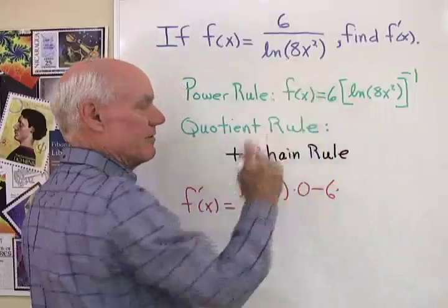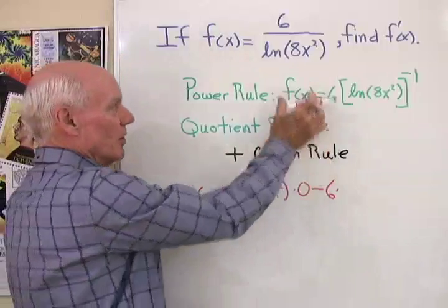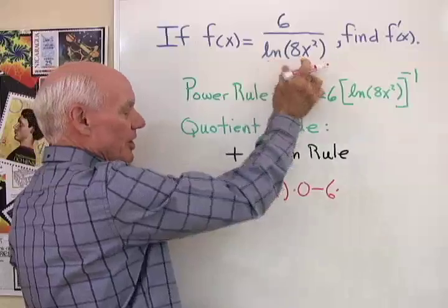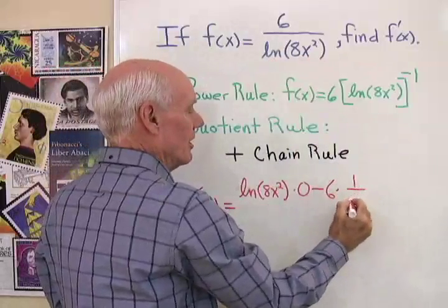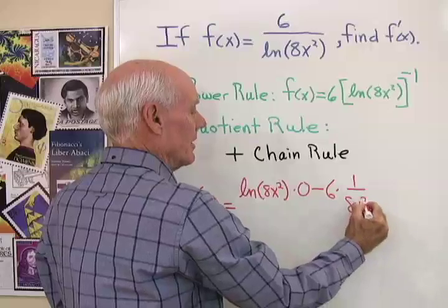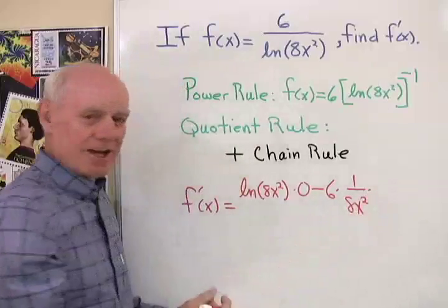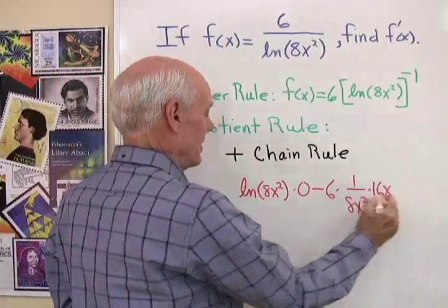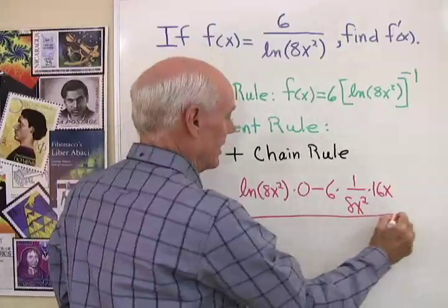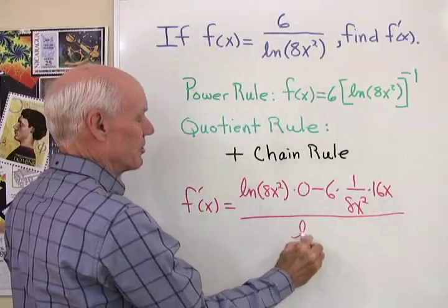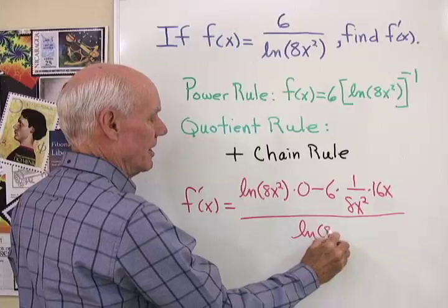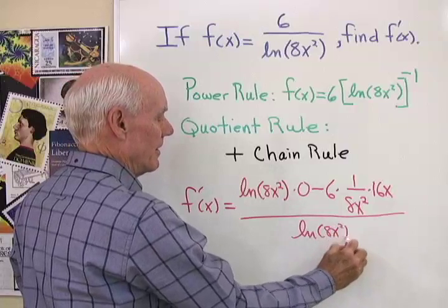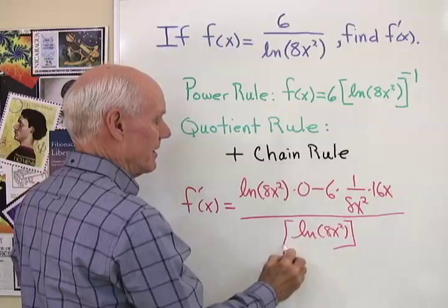times the derivative of the denominator, and here's where we use the chain rule. The derivative of natural log 8x squared is 1 over 8x squared, times the derivative of 8x squared, that's the chain rule, 16x. And that whole thing is divided by the denominator squared, so natural log 8x squared, quantity squared.